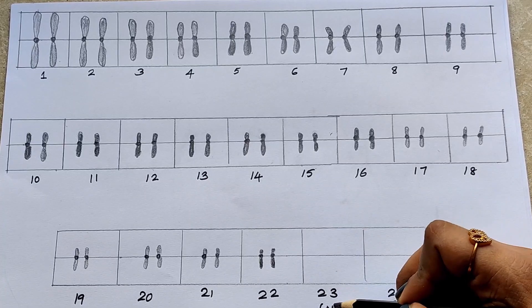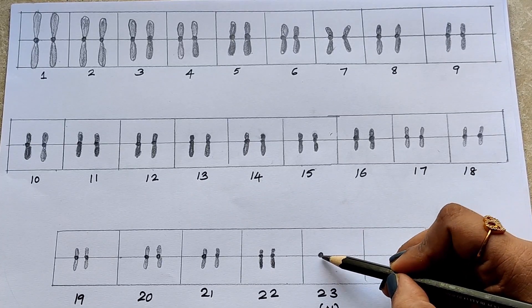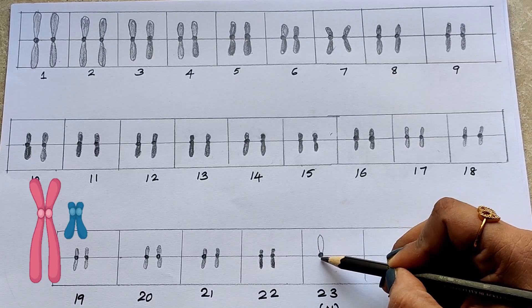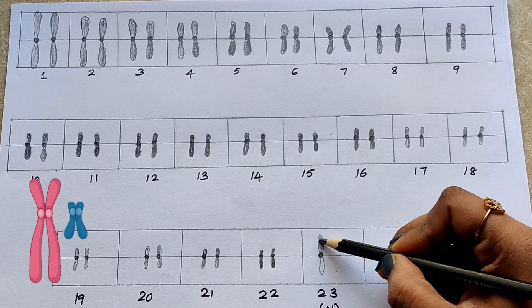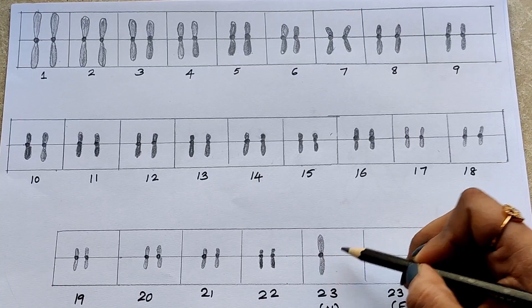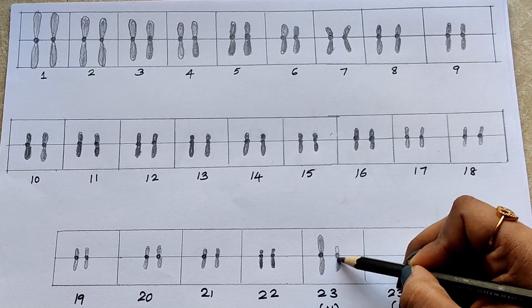23rd pair helps to identify the sex of an individual. If it is X Y, individual is a male. Here the X chromosome is submetacentric and Y chromosome is acrocentric.